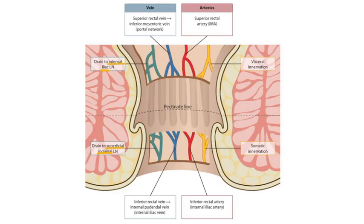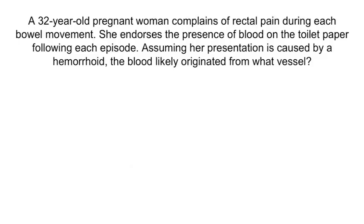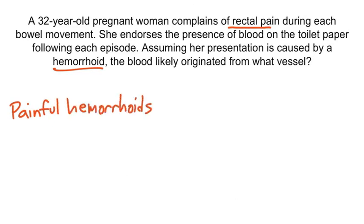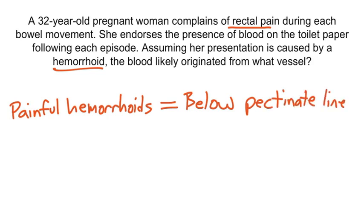Now that we've covered the arteries, veins, lymphatics, and innervation, let's do a question. A 32-year-old pregnant woman complains of rectal pain during each bowel movement and endorses blood on the toilet paper following each episode. Assuming her presentation is caused by a hemorrhoid, the blood likely originated from what vessel? Notice that her hemorrhoids are painful. Since pain requires somatic innervation, these hemorrhoids must be below the pectinate line.